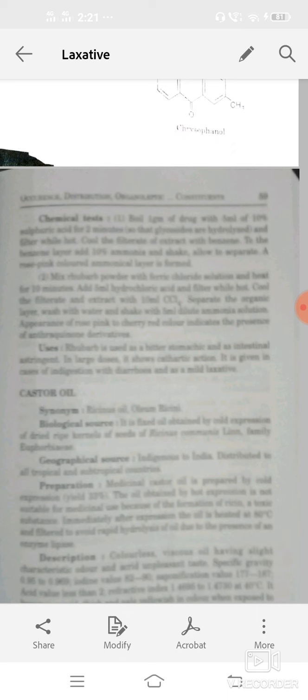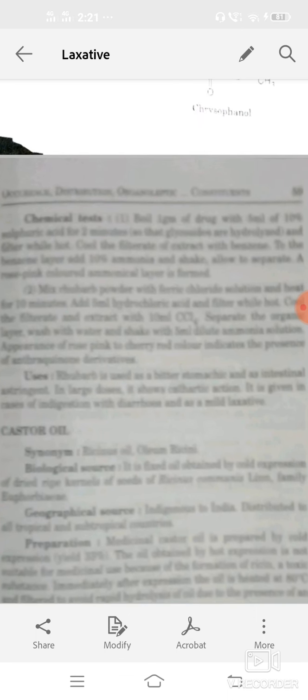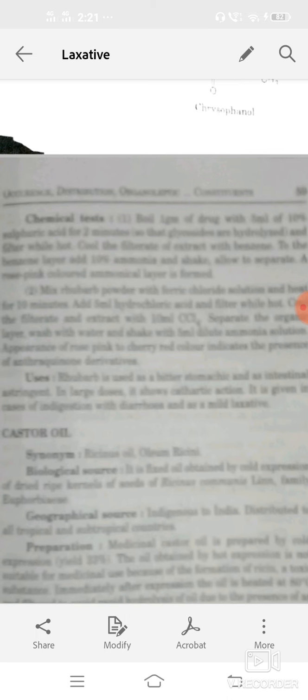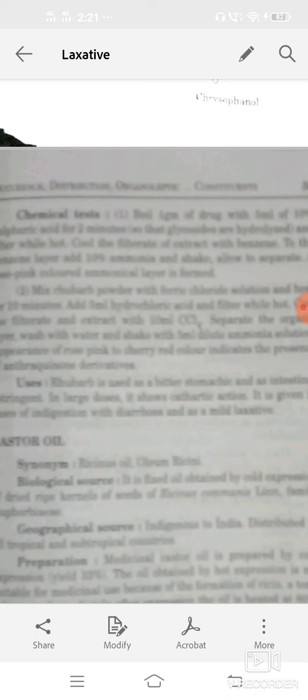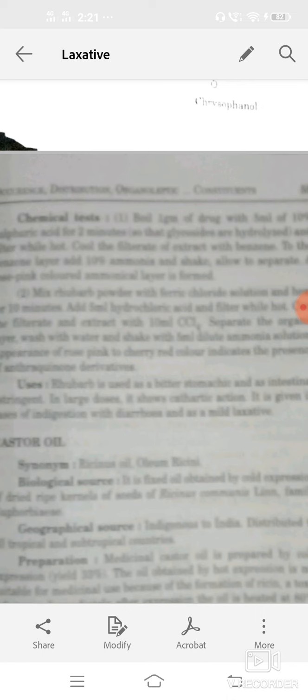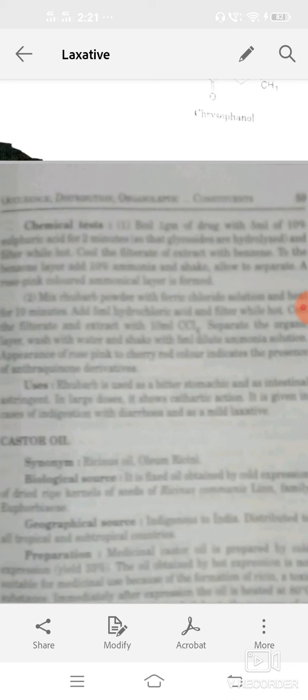Extract with benzene. To the benzene layer, add 10% ammonia, shake, and then rose pink colored ammoniacal layer is formed. Uses: rhubarb as a bitter stomachic or as an intestinal astringent. In large doses it shows cathartic action, means as a cathartic or in case of indigestion with diarrhea or acts as a mild laxative.